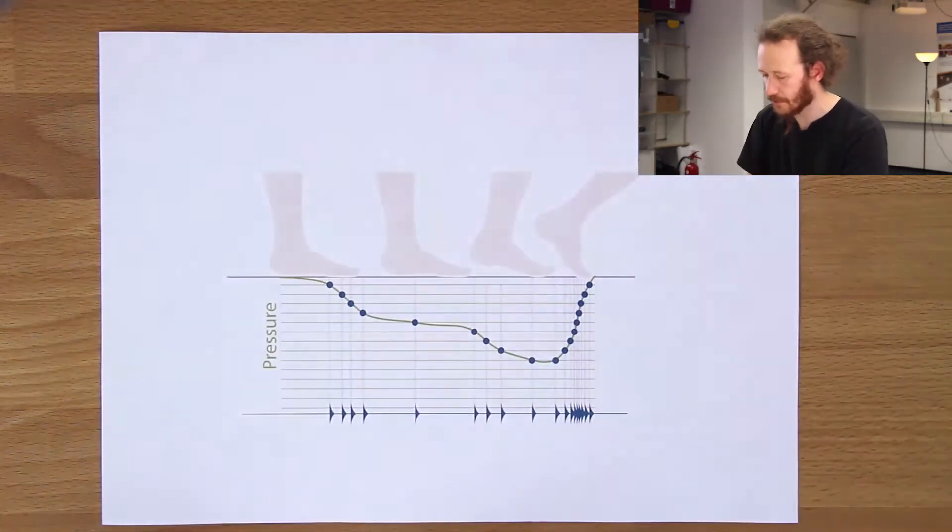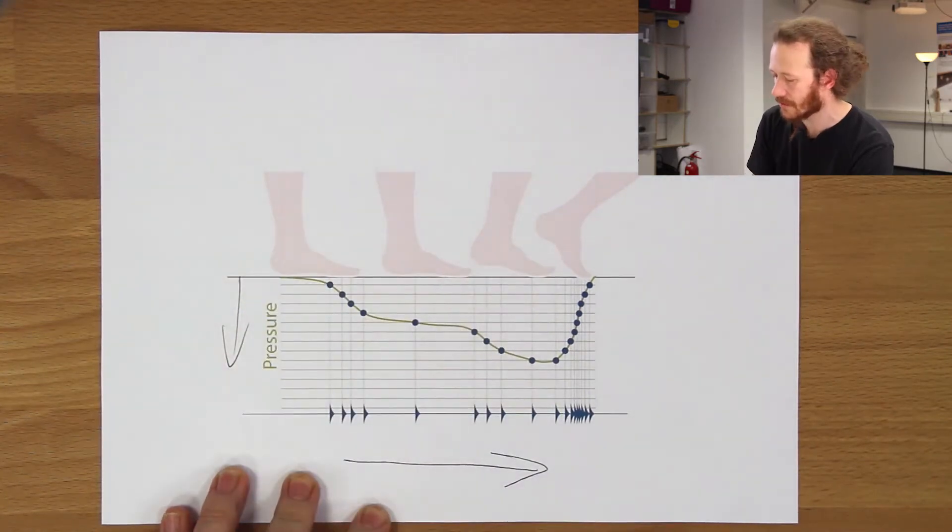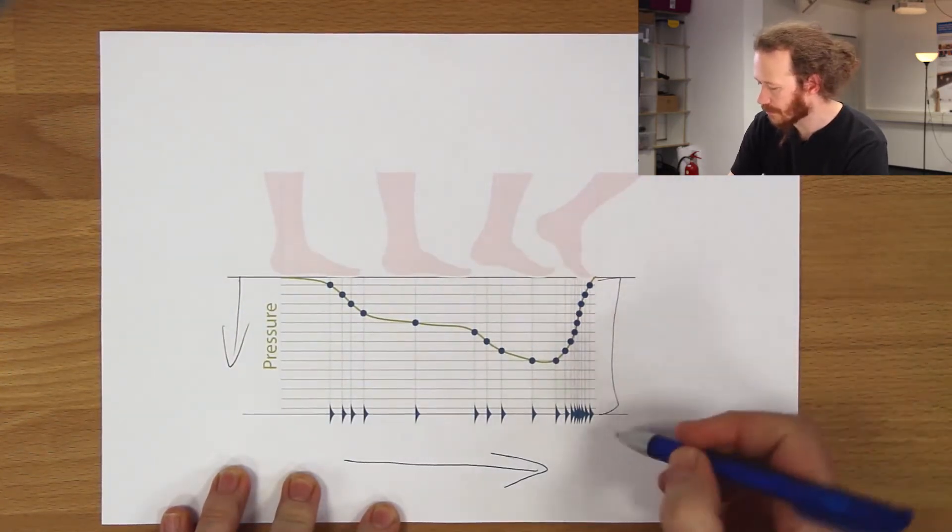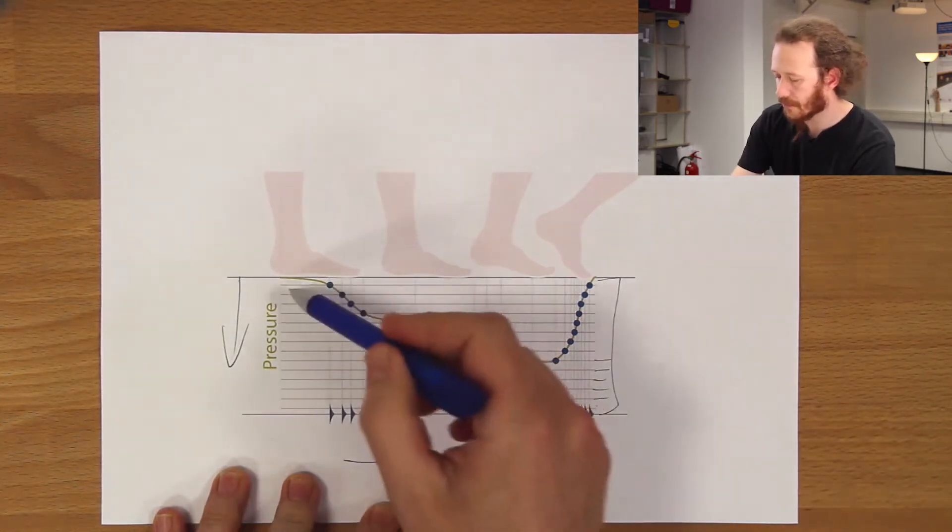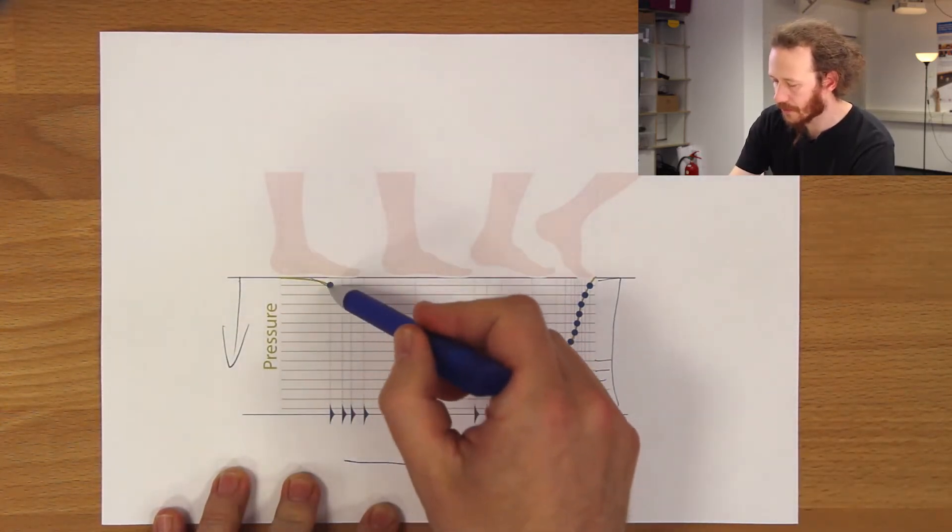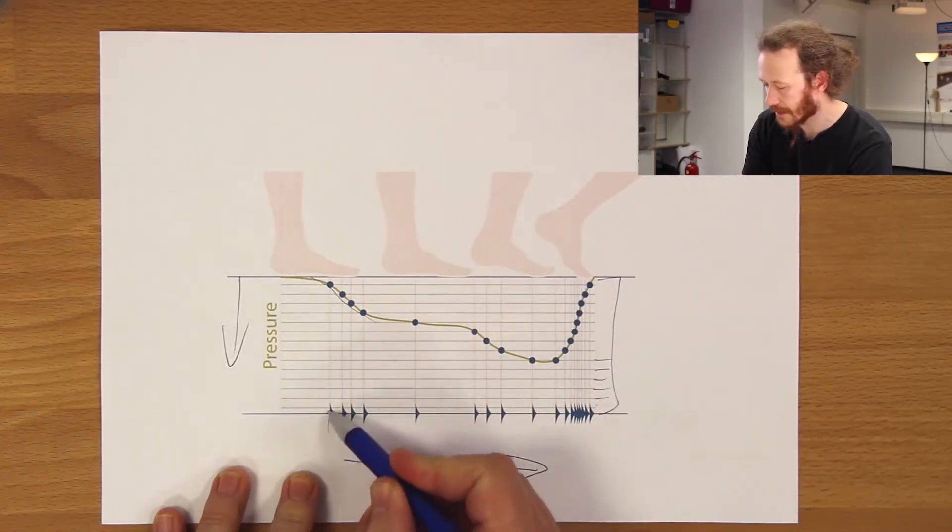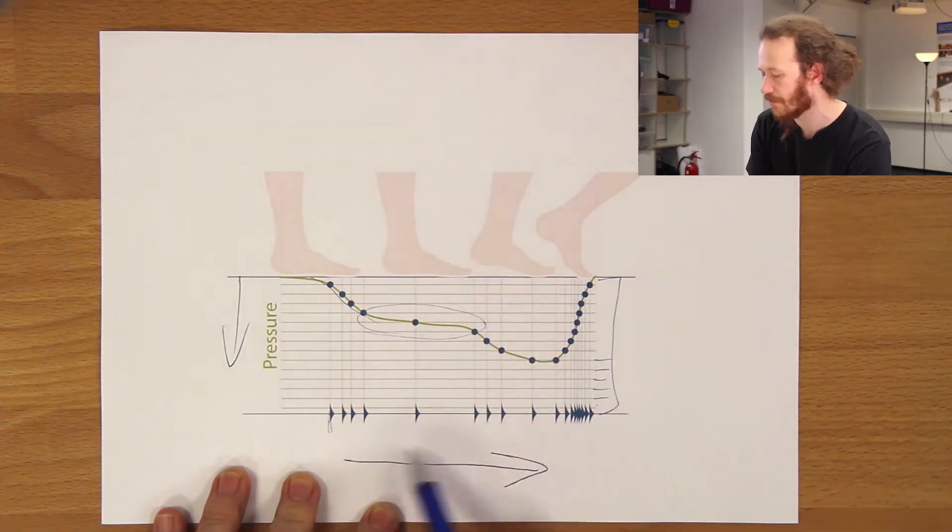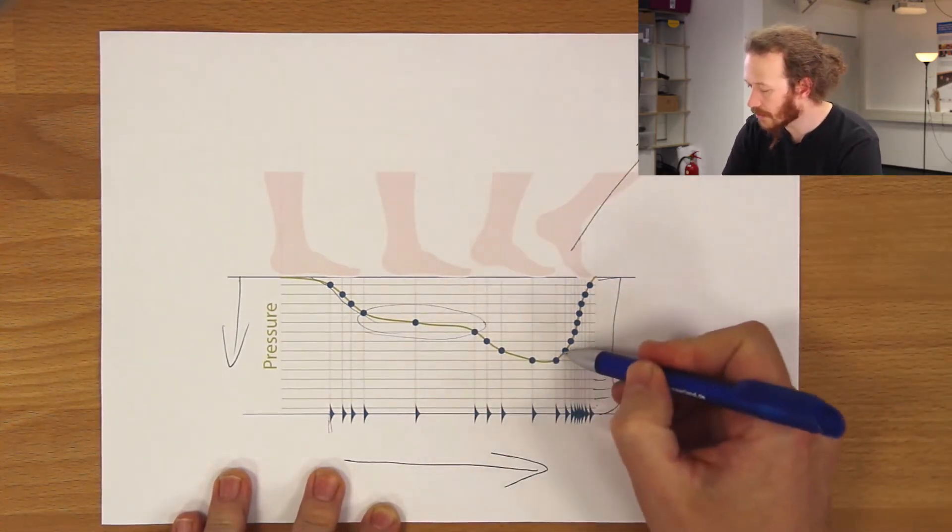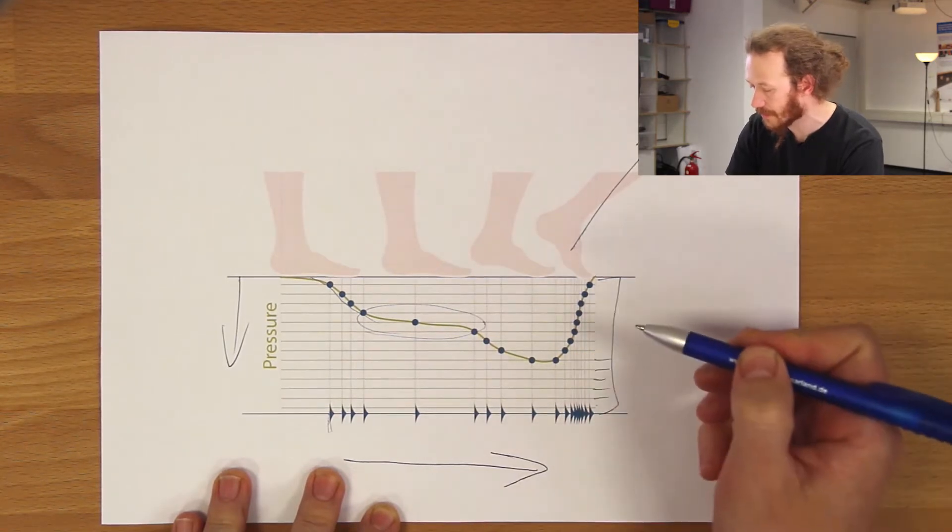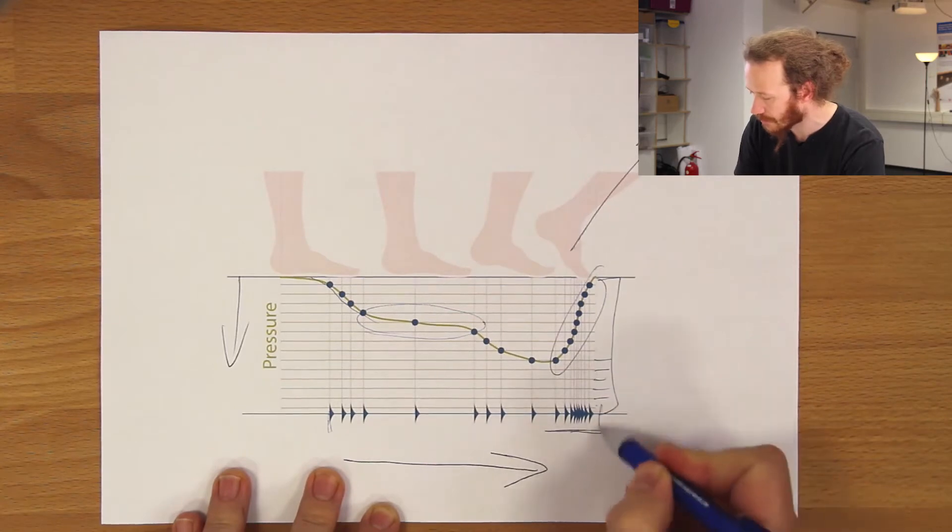So we have a very simple model here where if you assume this is time and pressure increases in this direction, we separate pressure into discrete bins. And here as I put my foot down and when the pressure exceeds a bin, it creates a tactile impulse. And then if I'm steady, there are very few pulses. And here when I lift my foot, because I'm transcending these bins very rapidly, there's a rapid sequence of pulses here too.